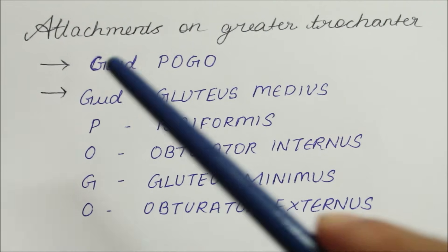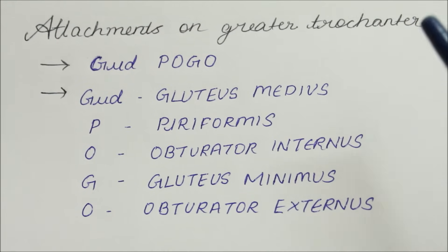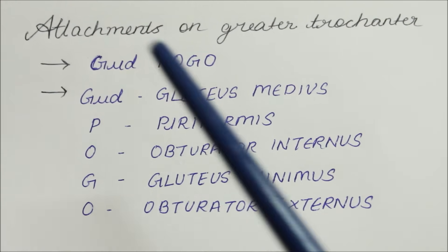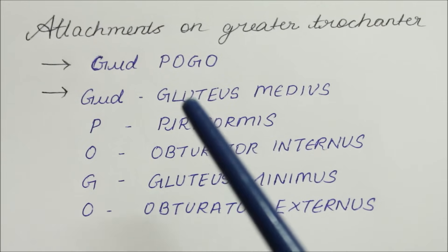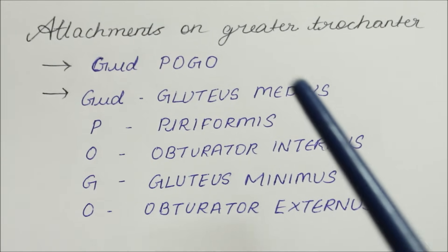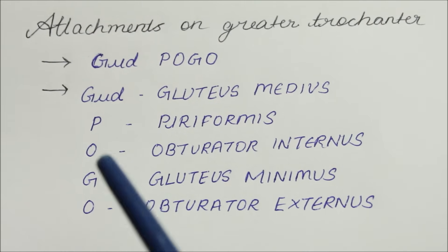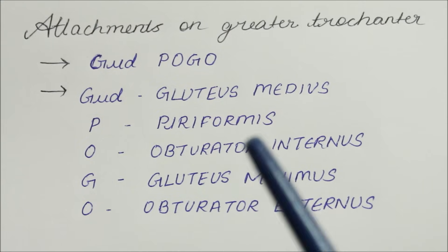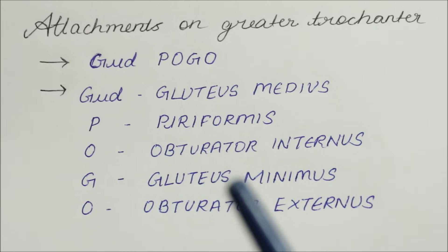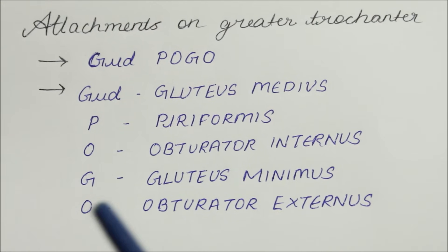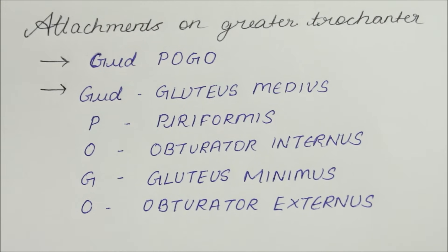An easy way to remember the attachments on the greater trochanter is by the use of the mnemonic GOOD POGO: G for gluteus medius, P for piriformis, O for obturator internus, G for gluteus minimus, and O for obturator externus.